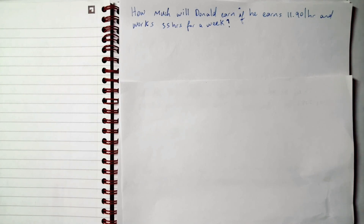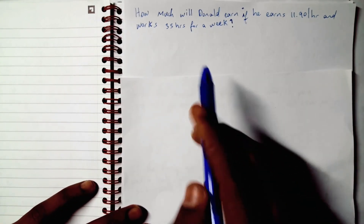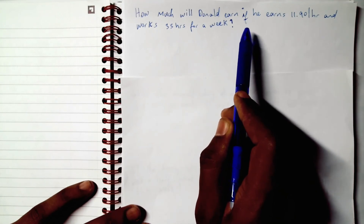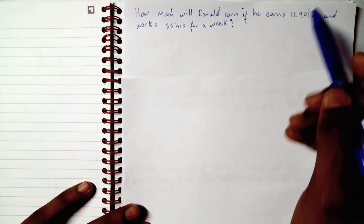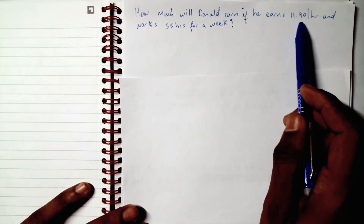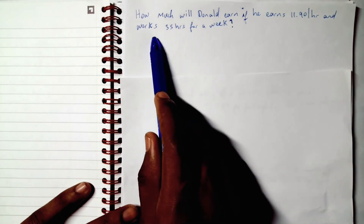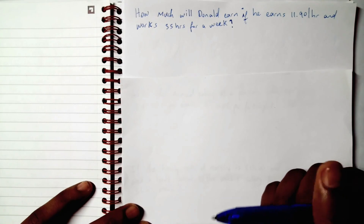We're continuing with another topic in consumer arithmetic — wages. How much will Donald earn if he earns $11.90 per hour and works 35 hours for a week? Pretty straightforward.